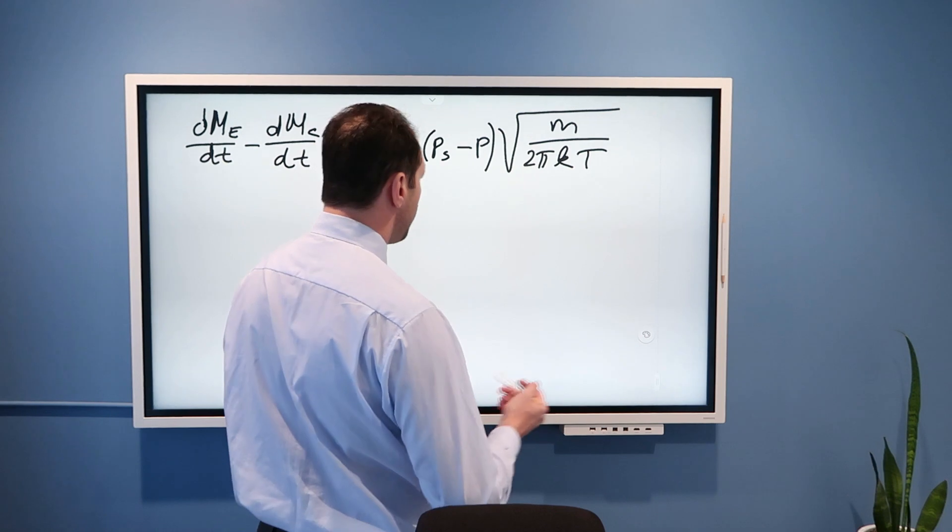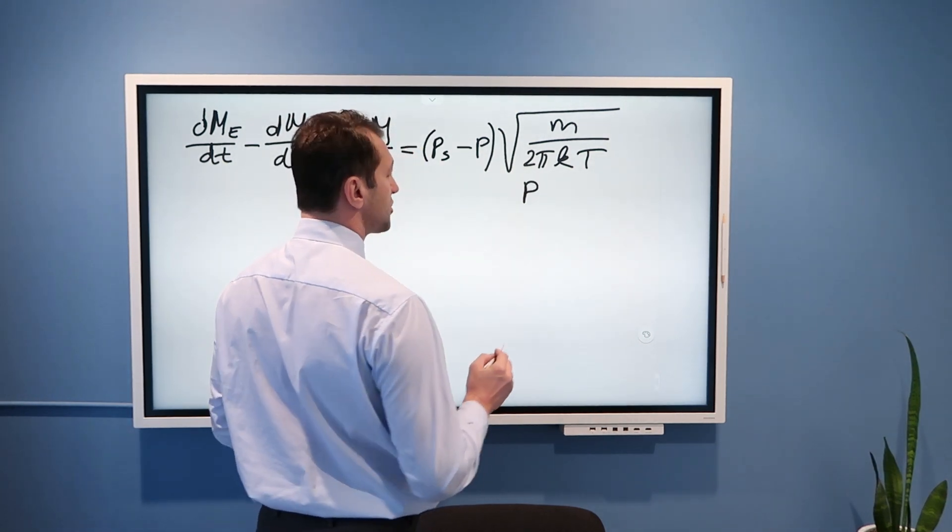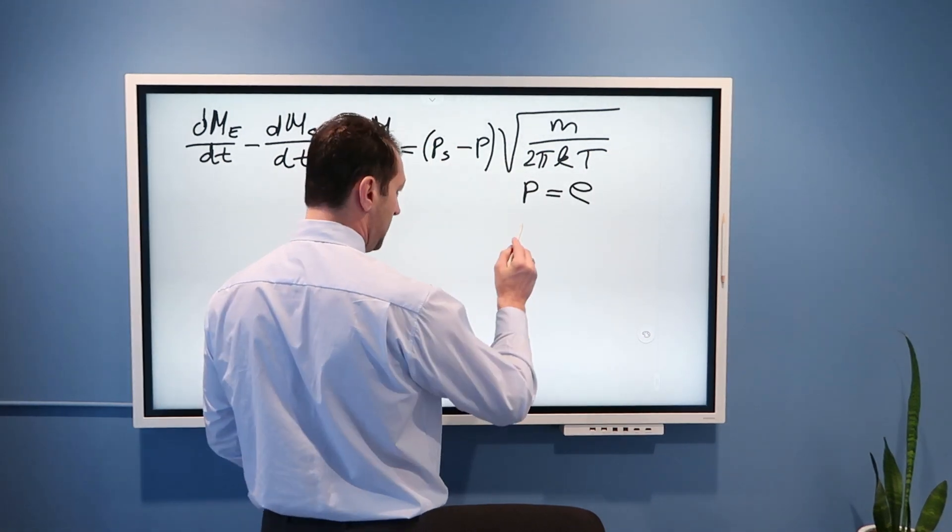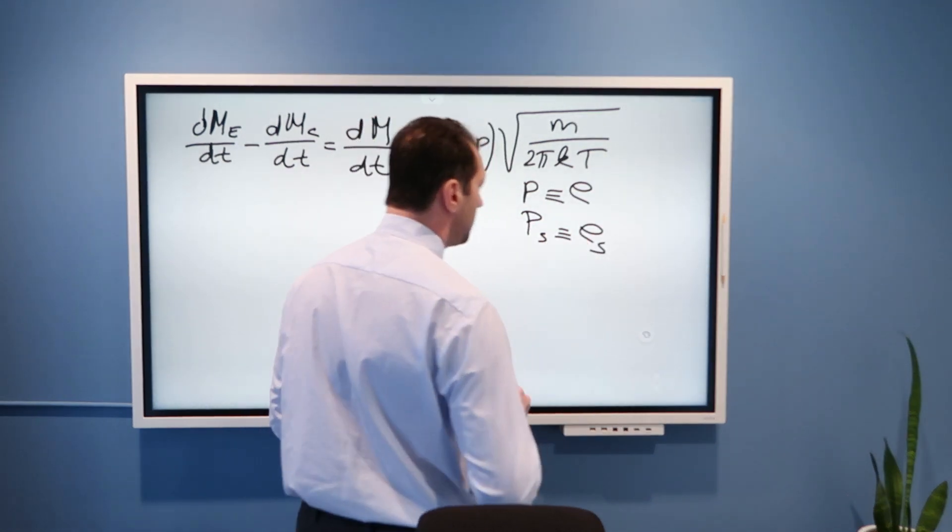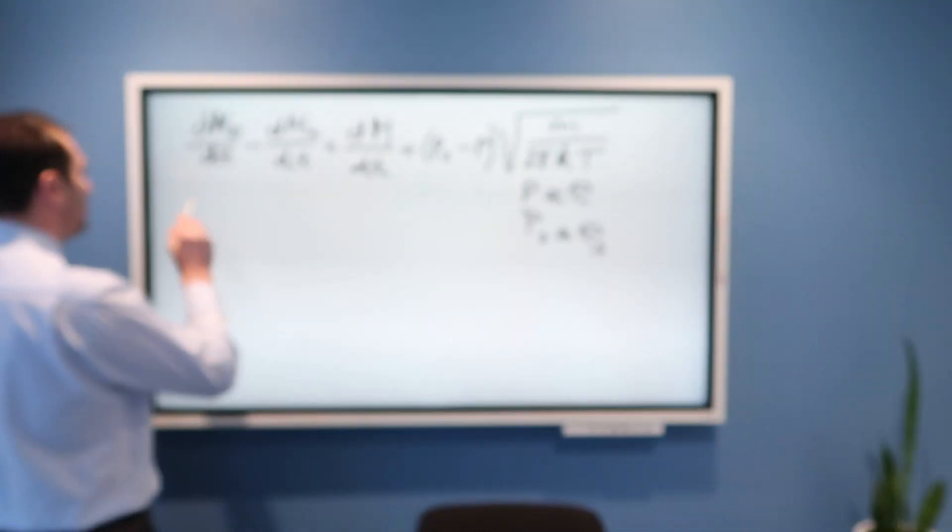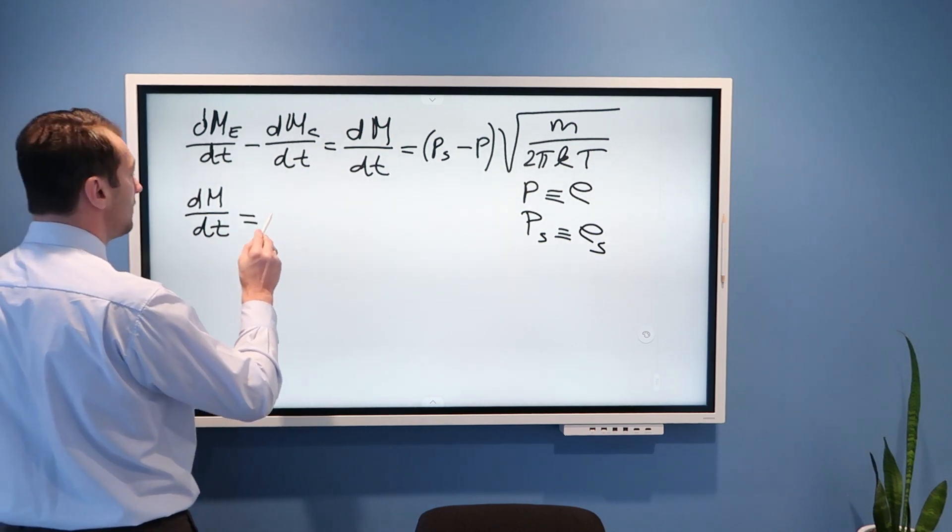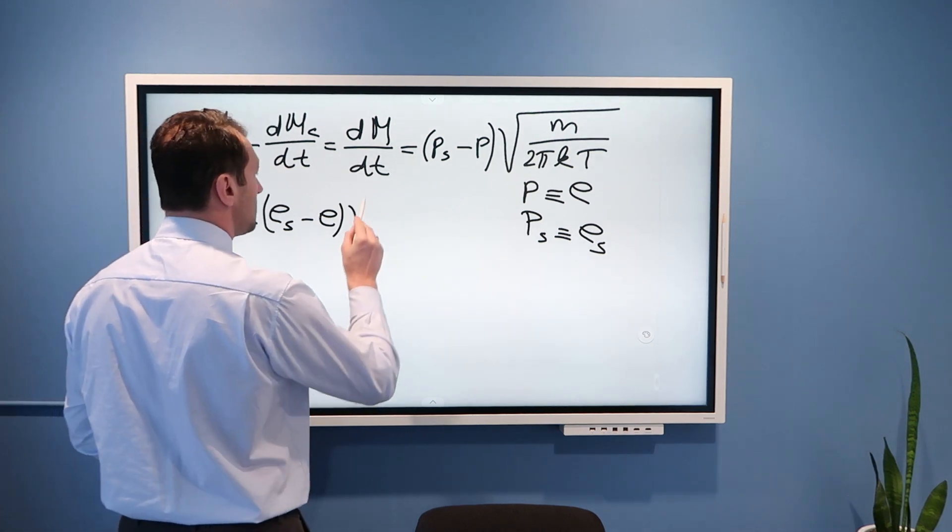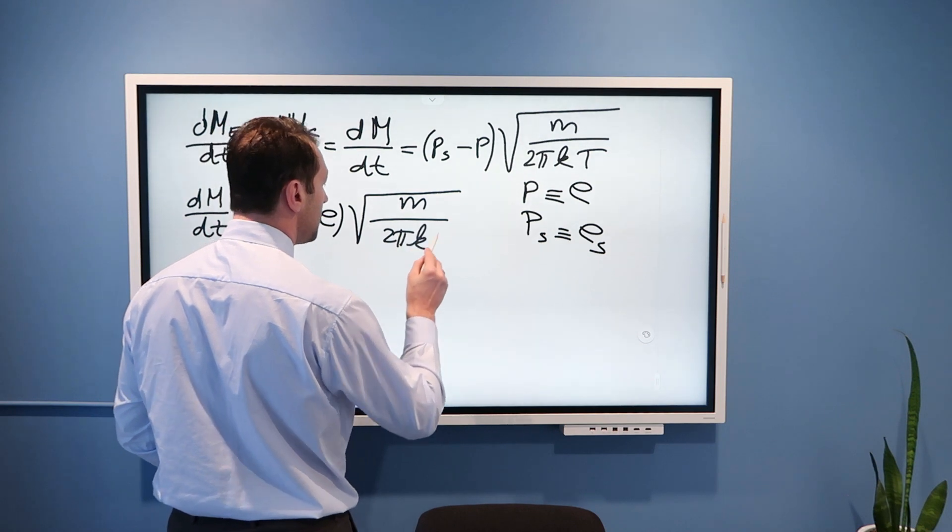is equal ps minus p square root m divided by 2πkT. We know from my previous videos that in atmospheric sciences and generally in physics, we call water vapor pressure of water vapor E, we use E, and saturation pressure of water vapor we write as ES. This is just identically equal. These are conventions that we use.